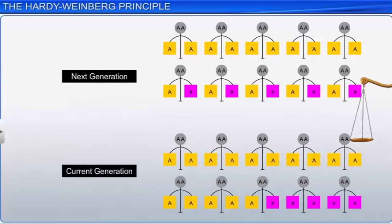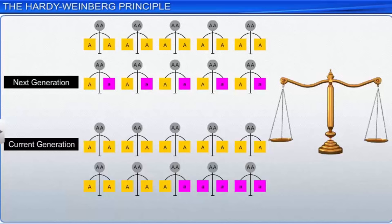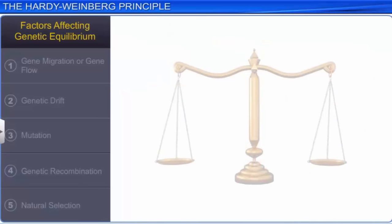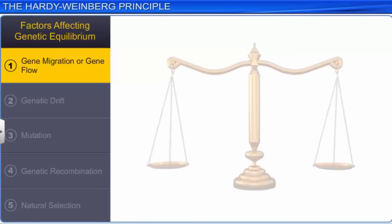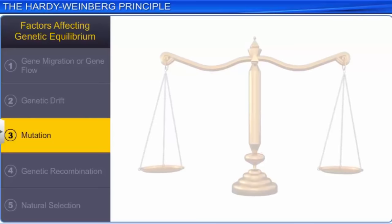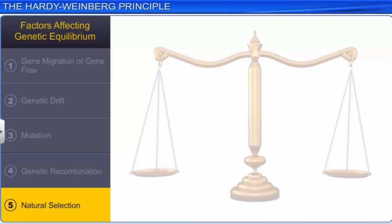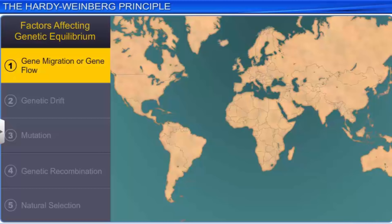Genetic equilibrium is affected by several factors, such as gene migration or gene flow, genetic drift, mutation, genetic recombination, and natural selection. Migration impacts the equilibrium because when a population moves from one place to another, there are changes in the gene frequencies of the old and the new populations. While new genes are added to the new populations, they are lost in the old population. When this gene migration takes place many times, it is called gene flow.